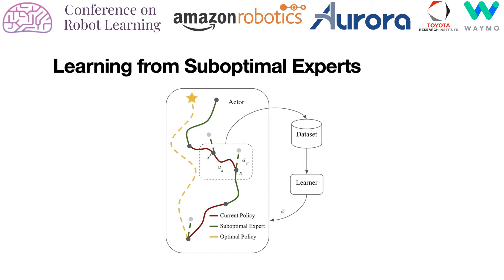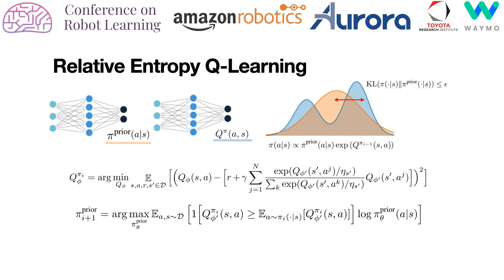The suboptimal expert's actions can be intertwined with the current policy's actions to achieve rich exploration. Note that it is also possible to record the actions that the suboptimal expert would have taken, shown as dotted lines. However, we find that current algorithms are ineffective in utilizing highly off-policy data generated from a suboptimal expert together with the exploration data generated by their own policy.